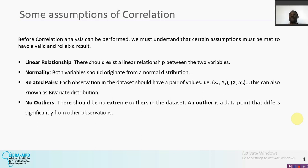The third assumption is related pairs: each observation in the dataset should have a pair of values. We have two variables x and y, and as long as we have one x, there should be a corresponding y — so x1 has y1, x2 has y2, x3 has y3. We can also call this a bivariate distribution. So another term for related pairs is bivariate distribution.